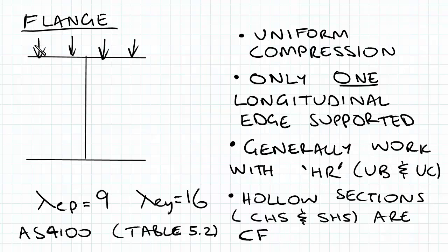So when we have this sort of flange, like I said, uniform compression, one longitudinal edge supported, we get a lambda EP, which is the plasticity limit of 9, and lambda EY of 16, which is the yielding limit. And this is in AS4100 table 5.2, which I'll be showing you.